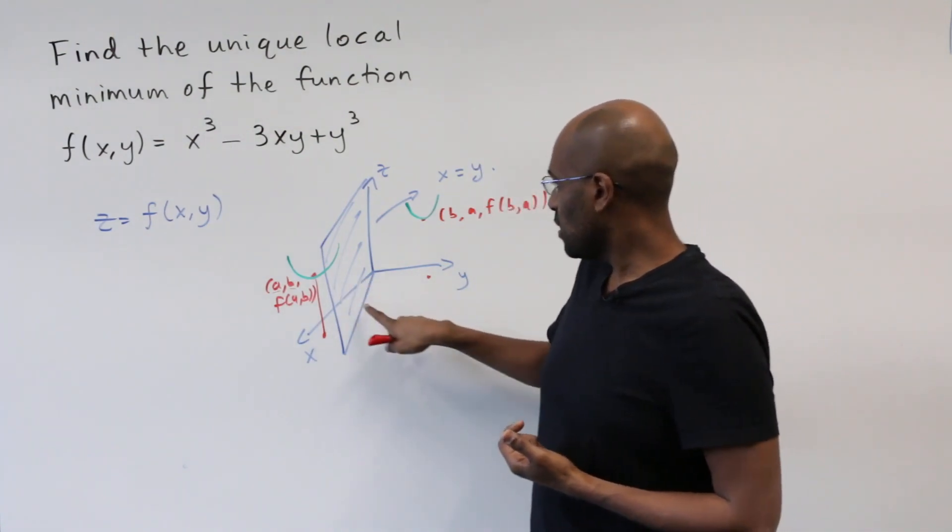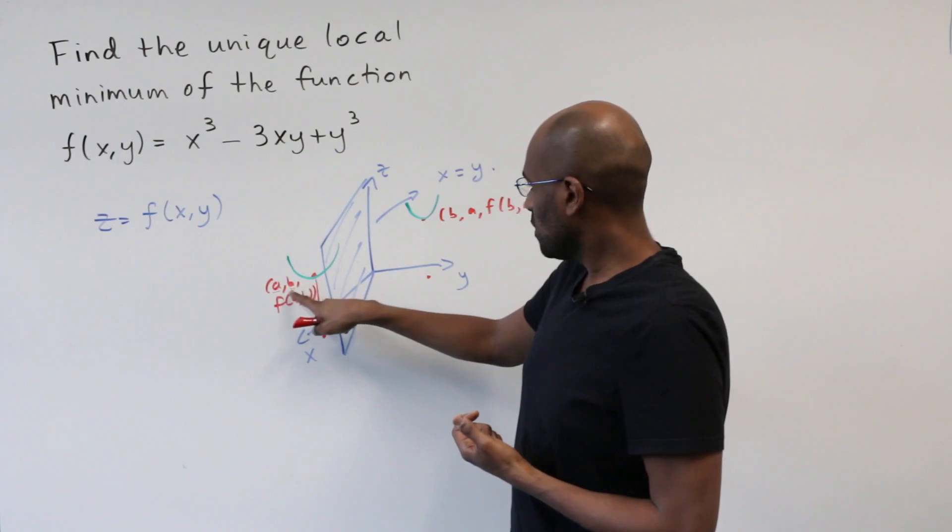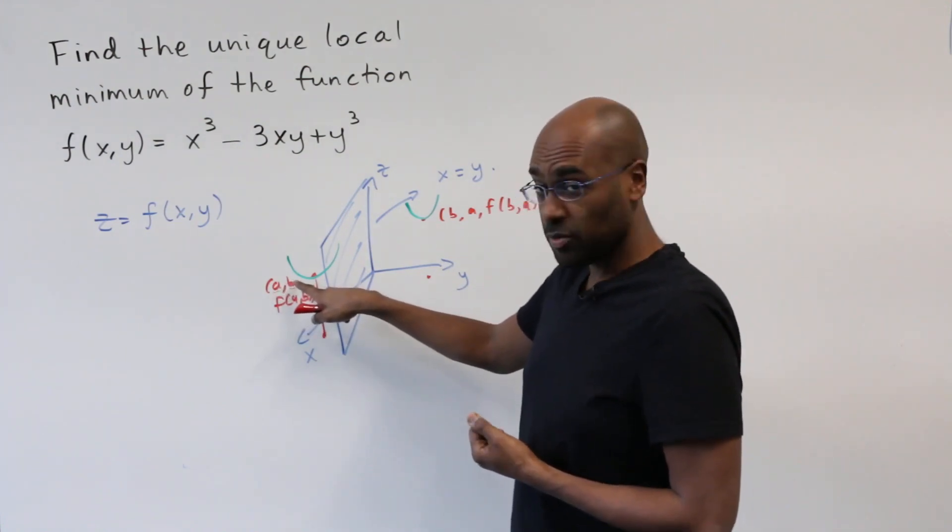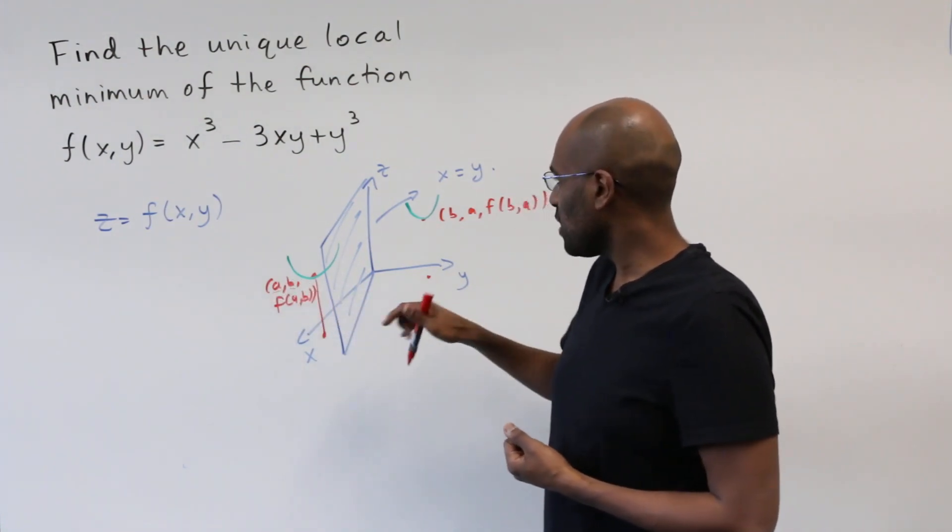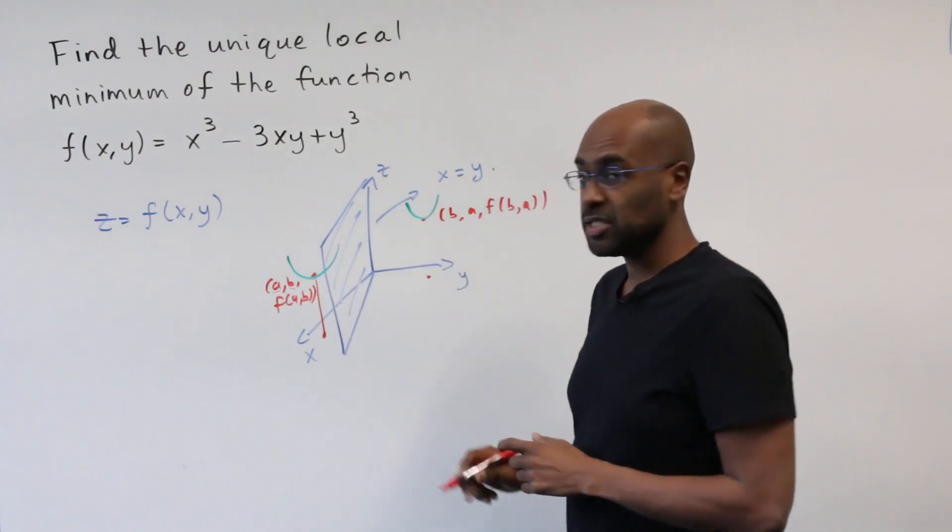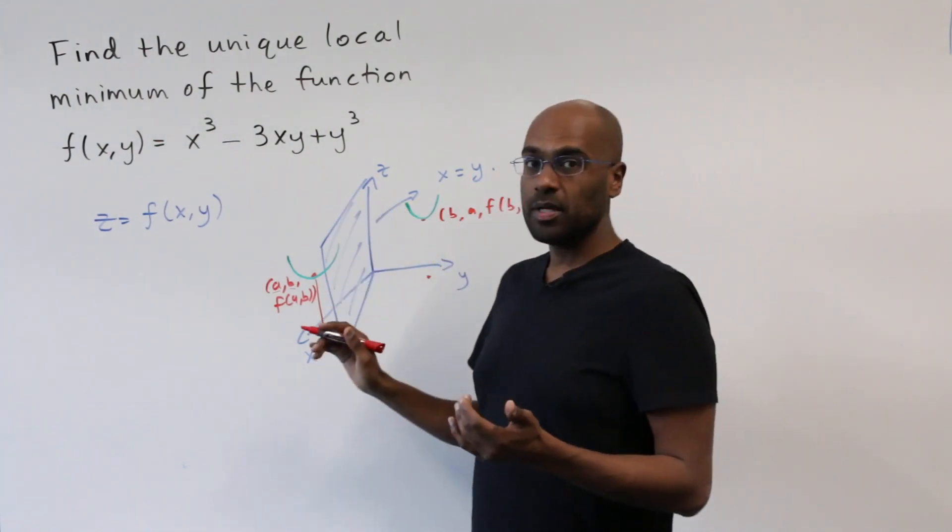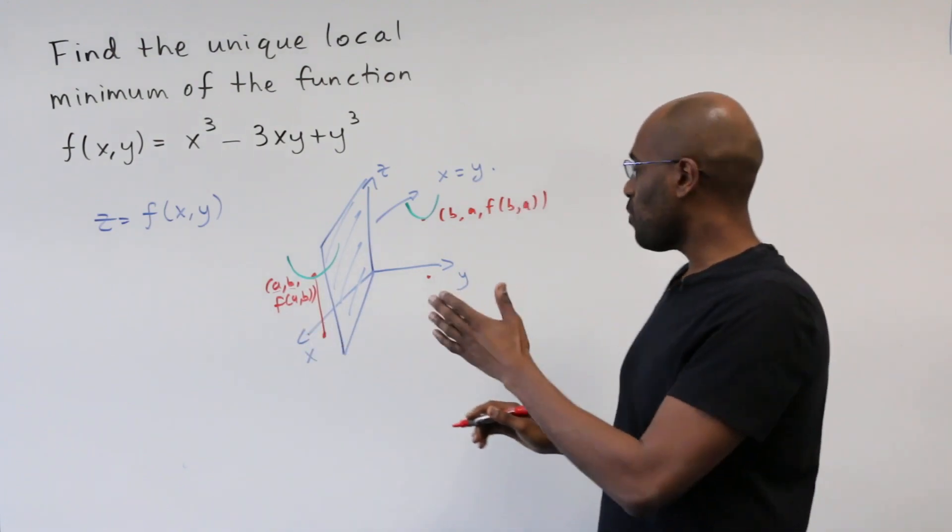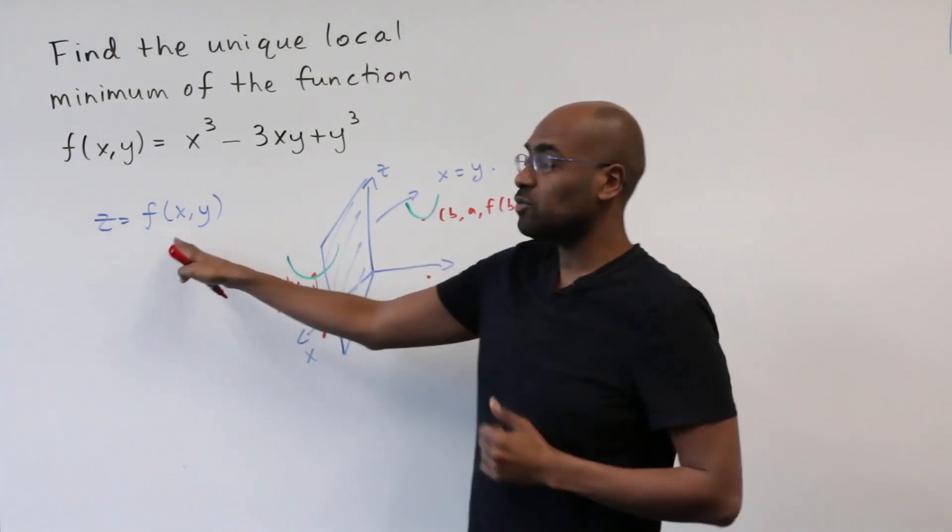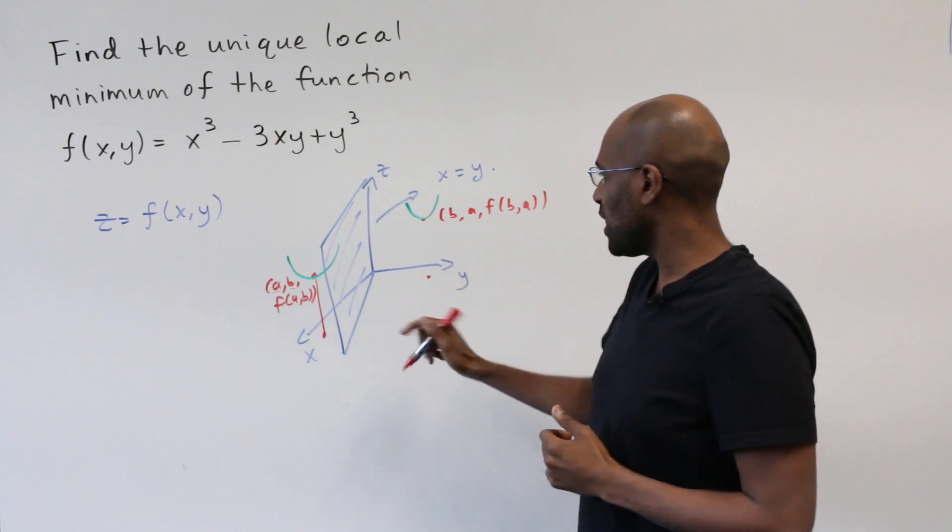That means that this point a, it would have to be a, f of a, a would lie somewhere on this plane x equals y. So if we're looking for this unique local minimum, it's going to be at a point where our curve, z equals f of x, y, intersects the plane x equals y.